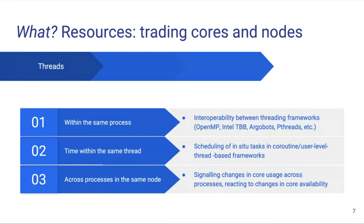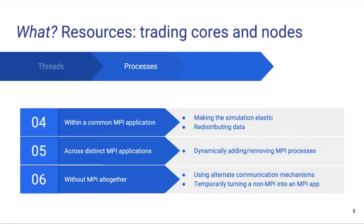We may want to share time within the same thread, which brings the question of scheduling in-situ tasks in coroutine or user-level thread-based frameworks — which also brings challenges. And if we have set up analysis and simulation in different processes, then maybe we want the simulation process to use fewer threads and the in-situ analysis process to use more threads, and vice versa. If we want to trade processes, we have to consider that we usually are within an MPI application. We can have one single MPI application that has split its MPI communicator so that some ranks run the simulation and some ranks run the analysis — then the question becomes how do we convert a rank from running simulation code to running analysis code and vice versa.